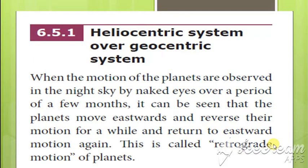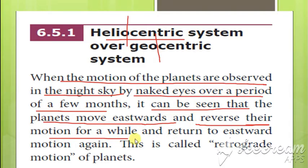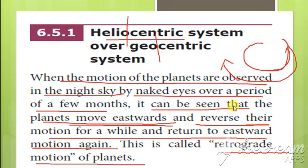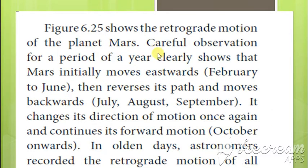First, the heliocentric system over the geocentric system. When the motion of the planets were observed in the sky by the naked eye over a period of a few months, it was observed that a planet moves eastwards, then reverses its motion for a while, and returns to eastward motion again. This is called the retrograde motion of the planets.